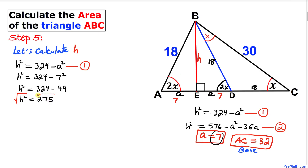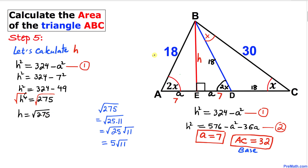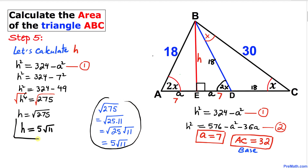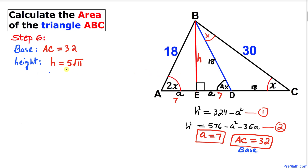Taking the square root of both sides: H = √275. Simplifying, H = 5√11. So our height is 5√11.